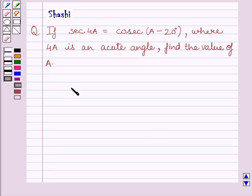First of all, let us understand that if theta is any acute angle in a right triangle, then cosec of 90 minus theta equals sec theta. This is the key idea to solve the given question.